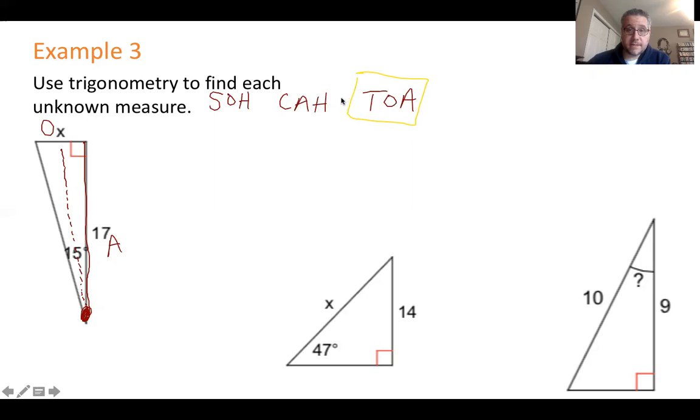So our setup looks like the following. We have tangent starting from a reference angle at 15 degrees is equal to the opposite, which is x over the adjacent, which is 17. You're trying to find the value of x, which is the unknown length.